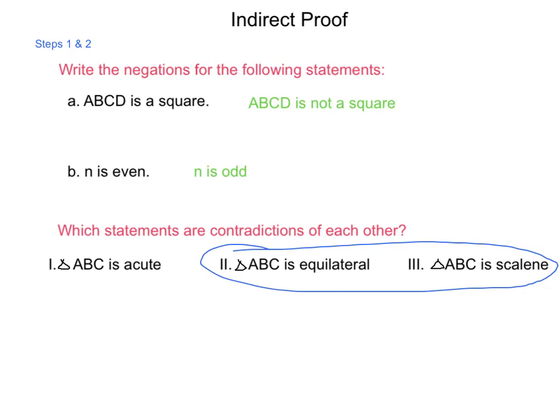Those are where we have our contradiction. So being able to write the negations and go through and find contradictions lead us up to actually building and writing an indirect proof. Let's take a look at one that we can do here quickly.